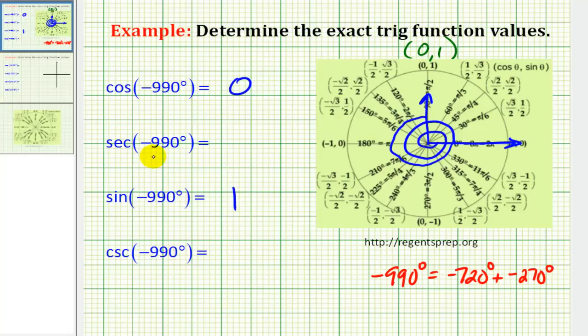Next, we know that secant theta is a reciprocal of cosine theta. So if we can determine the reciprocal of 0, we'll know the secant function value. The easiest way to do this is to make 0 into a fraction. Well, 0 over 1 would be a fraction. If we take the reciprocal of 0 over 1, or 0 divided by 1, it would be 1 divided by 0. Well, 1 divided by 0 is undefined, and therefore secant theta does not exist.